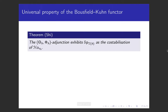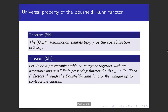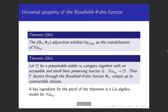In my PhD thesis, I showed that the adjunction given by the Bousfield-Kuhn functor exhibits the infinity category of TH-local spectra as the co-stabilization of the infinity category of VH periodic homotopy types. As a consequence, we obtain the universal property of the Bousfield-Kuhn functor: namely, it is the initial, accessible, and limit-preserving functor from the infinity category of VH periodic homotopy types to a presentable stable infinity category. A key ingredient for the proof of the theorem is a Lie algebra model for the VH periodic homotopy types, which I will briefly recall in the next slide.